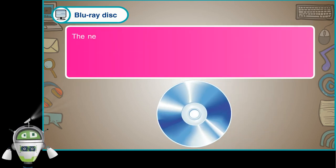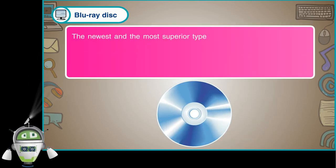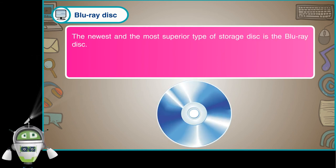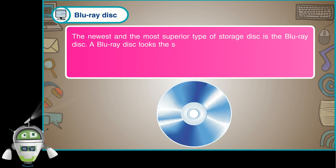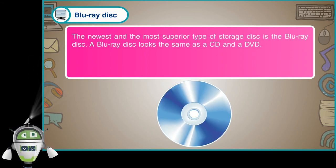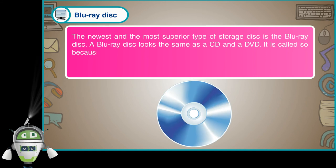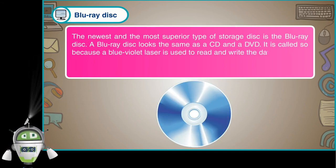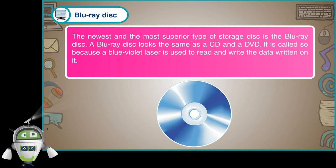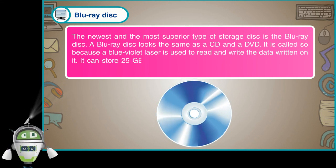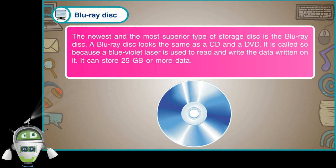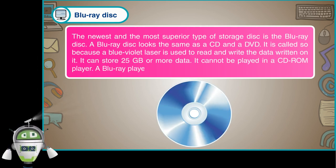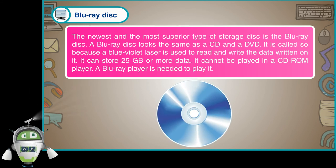The newest and most superior type of storage disc is the Blu-ray Disc. A Blu-ray Disc looks the same as a CD and a DVD. It is called so because a blue-violet laser is used to read and write the data on it. It can store 25 GB or more of data. It cannot be played in a CD-ROM player; a Blu-ray player is needed to play it.